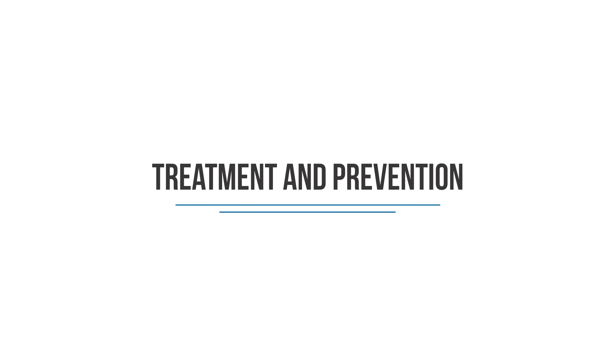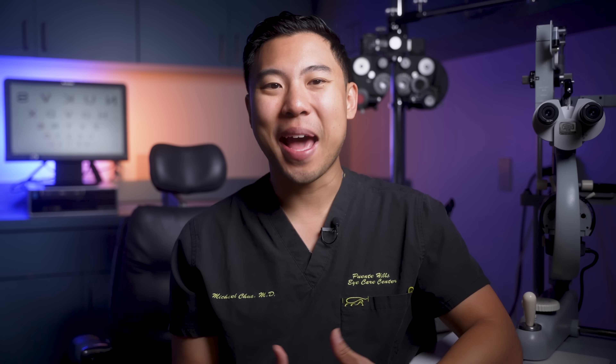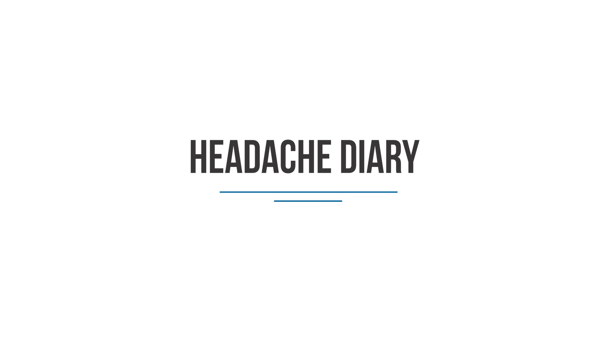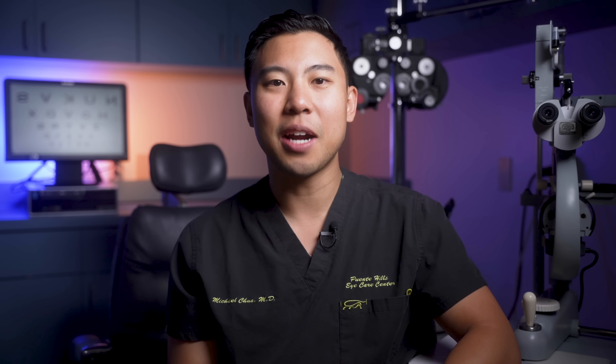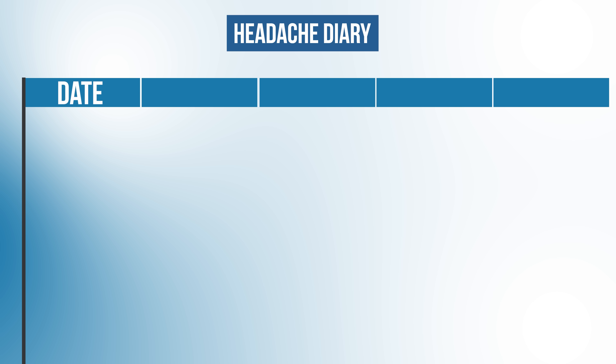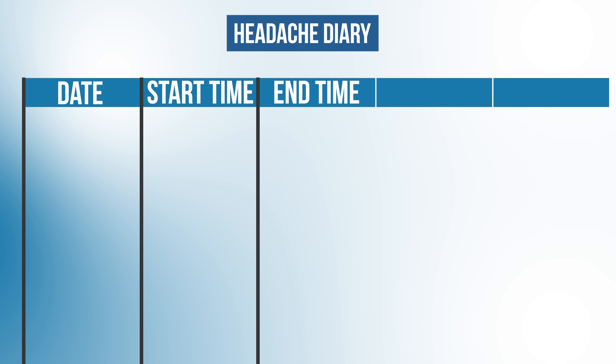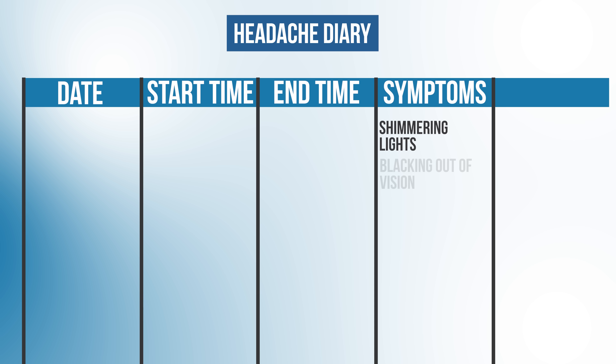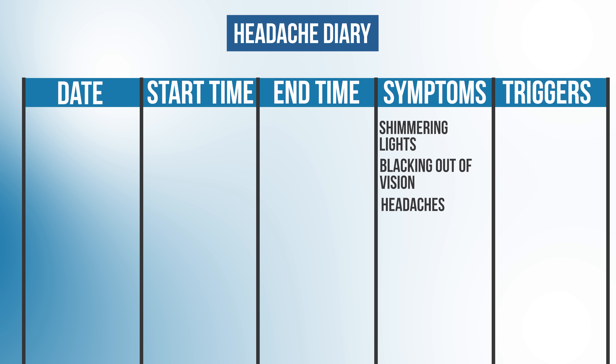Now let's discuss how to treat and prevent ocular migraines. The primary focus is to avoid those triggers. It helps to keep a headache diary to organize your information for yourself and your doctor. Set up columns for the date of the retinal migraine, start time, end time, symptoms such as shimmering lights or blacking out of vision or headache, and most importantly, triggers — what you were doing prior to the onset. When you review multiple episodes, you can look for patterns into what may be causing your retinal migraines.